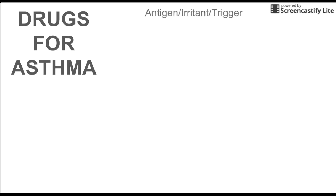Before we begin, we want to give a brief introduction to the pathogenesis of asthma. Asthma is typically caused by a trigger, such as an antigen, an irritant, stress, exercise, or hypoxia. There's a whole list of triggers for asthma.